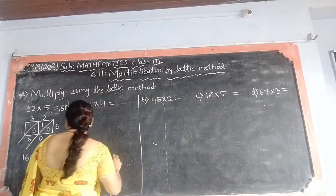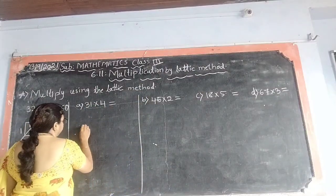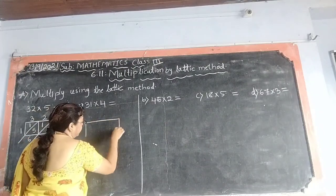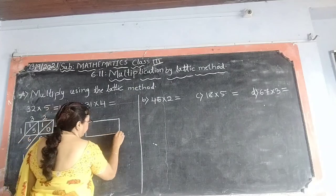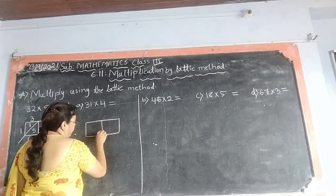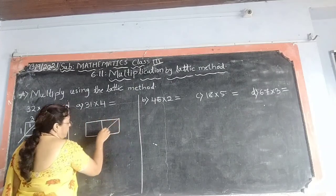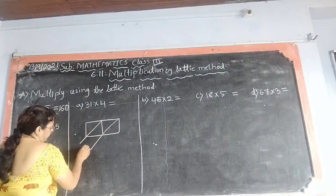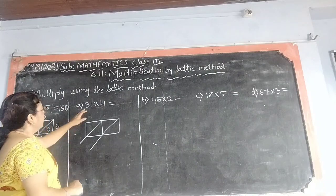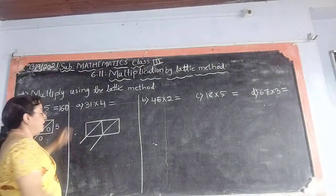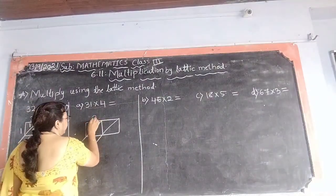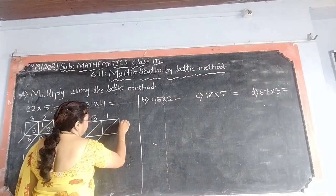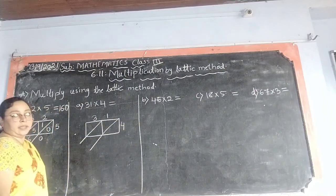See? Now, again we will draw one box, like this. From here to here, like this. Then, here one. Now, what is the multiplicand? 31. 31 we will write top of the box. Multiplier, 4. We will write here.